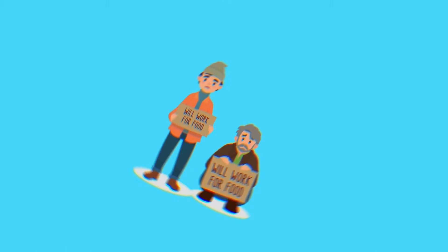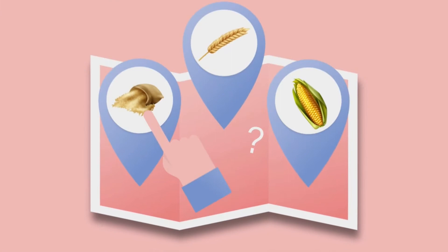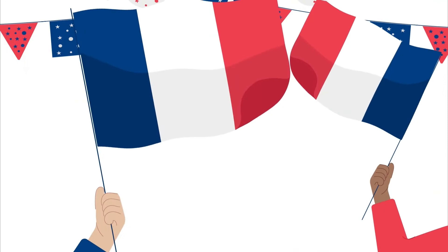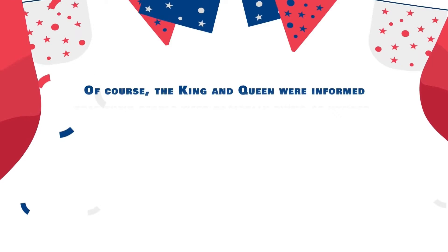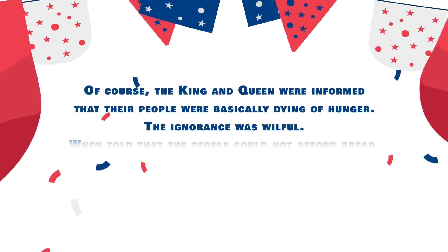So now, most of the people in France couldn't afford what they had been living on, just barely, but surviving all the same. Bakeries became more looted than banks, and people stole and lynched just for bread. Where did all the grains go? To Versailles, of course. They had parties, and nobles, and princesses to be fed. And here, the most famous quote of the French Revolution was born. Of course, the king and queen were informed that their people were basically dying of hunger. The ignorance was willful. When told that the people could not afford bread, Marie Antoinette turned up her nose and said, Let them eat cake.